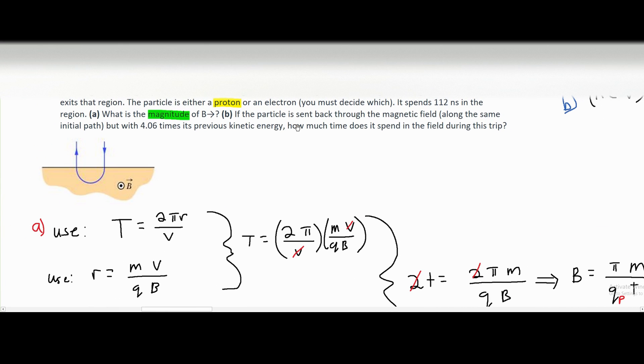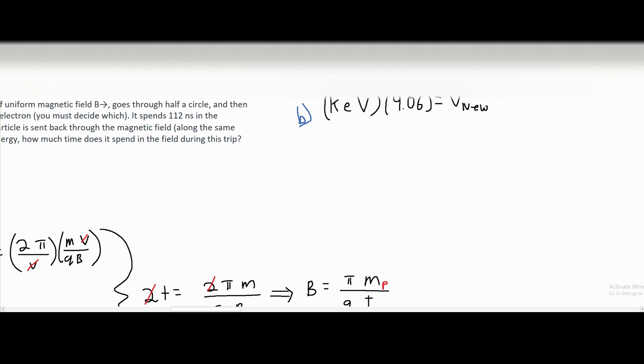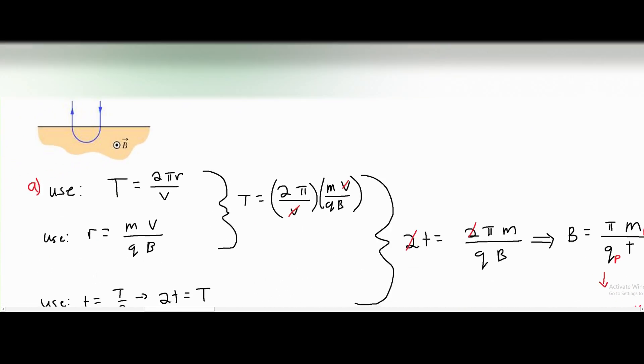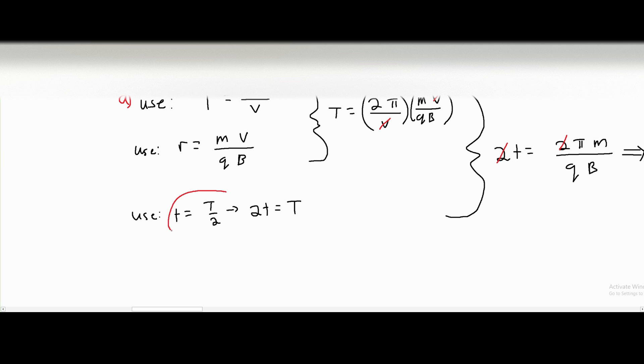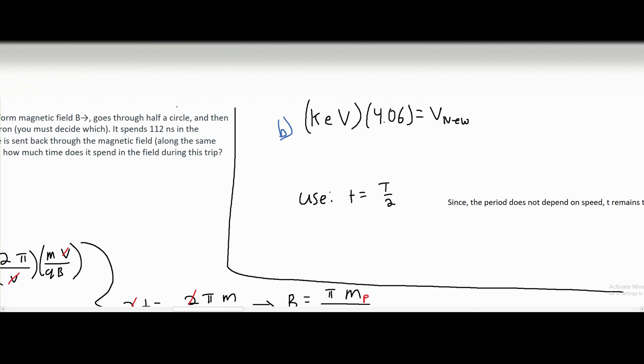For part B, we're asked if the particle is sent back through the magnetic field along the initial path, but with 4.06 times its previous kinetic energy, how much time does it spend in the field during this trip? We're given the new value 4.06 times its previous kinetic energy. And we can write that out like this. We're asked to find time. And our formula for time we wrote actually down here like this. However, we can notice that our time, it doesn't have any V, it doesn't have any speed in it. So we can make the note that since the period does not depend on speed, T time remains the same, which is 112 nanoseconds.